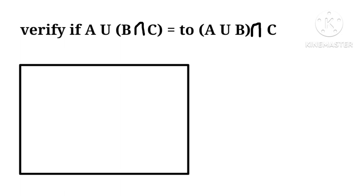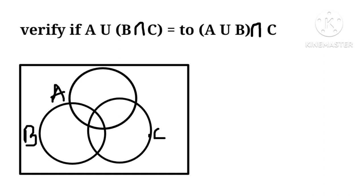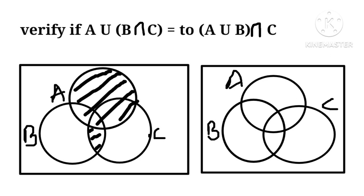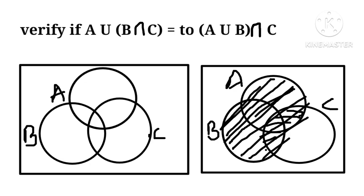Let this as a universal set and these are three intersecting sets A, B and C. This region is B intersection C and this is A, hence the shaded region as A union B intersection C. Similarly, when we draw A intersection B union C, the region shown is not same, hence unequal.